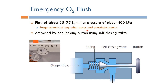This is activated by an unlocking button, which looks like this, and the actual diagram of it looks like this. Basically, this is a self-closing valve. When we are not pressing this button, the self-closing valve closes the opening and allows no oxygen to flow. Whenever we push this button, the oxygen has a path to flow from outside to the breathing circuit.